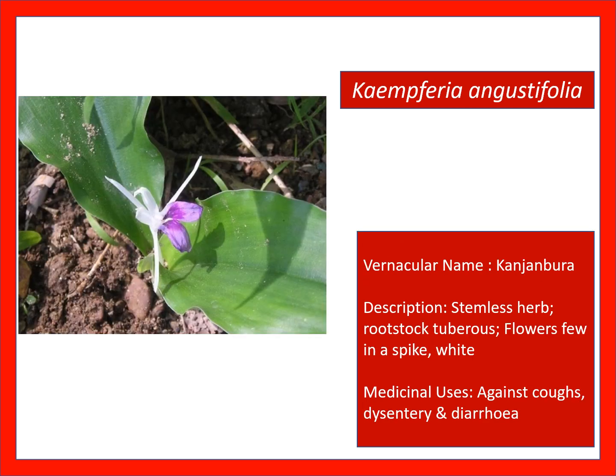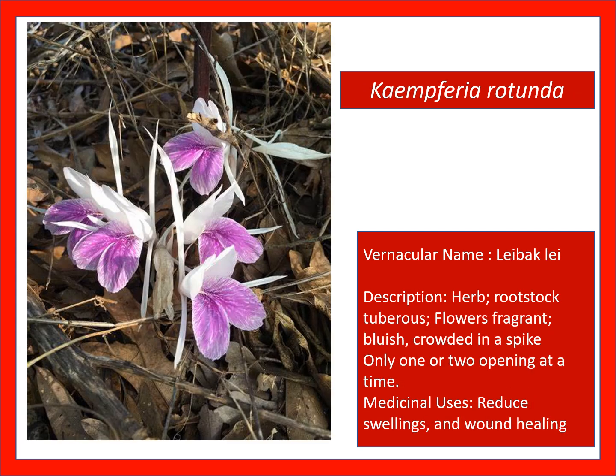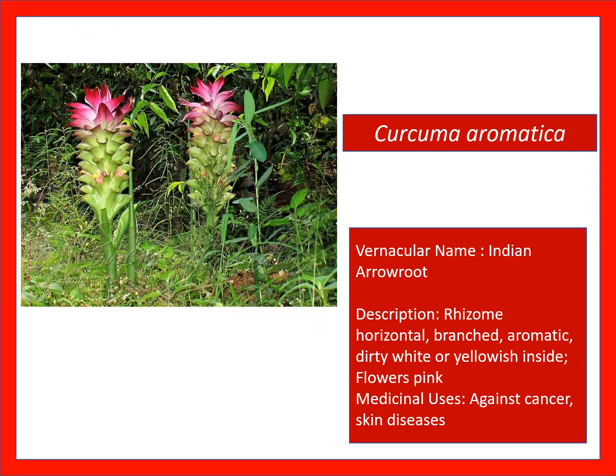Ccomperia angustifolia — against calf dysentery and diarrhoea. Ccomperia rotunda — reduces swelling and aids wound healing. Curcuma aromatica — against cancer and skin disease; it is also used as food, commonly known as Indian arrowroot.